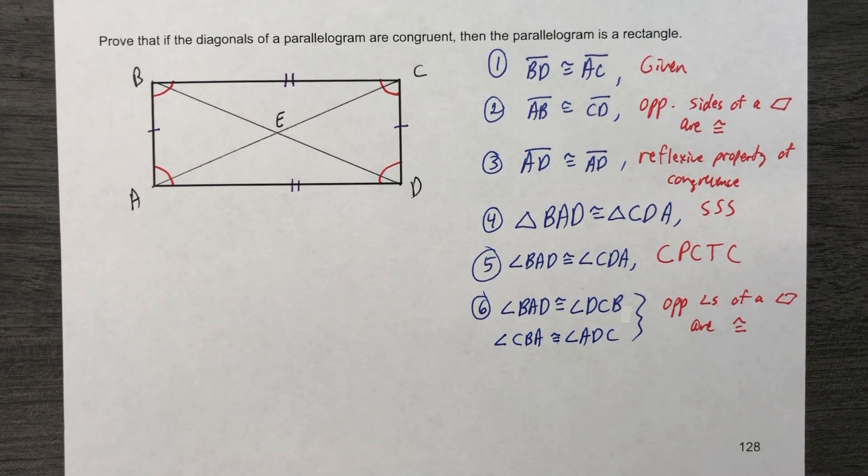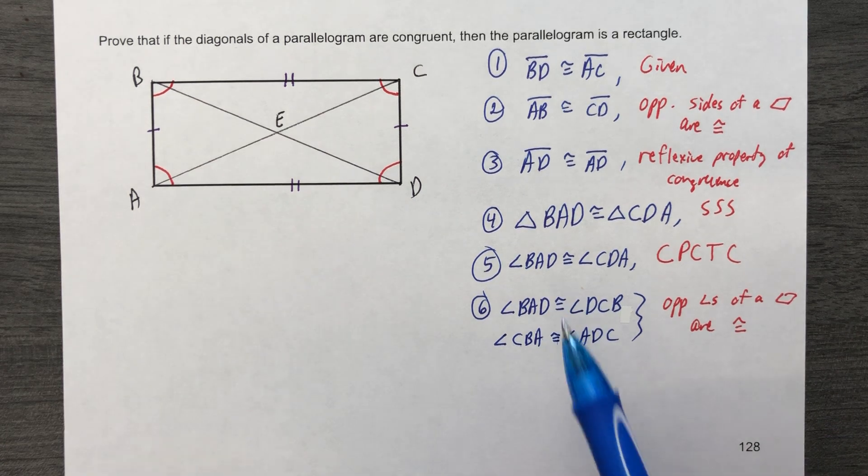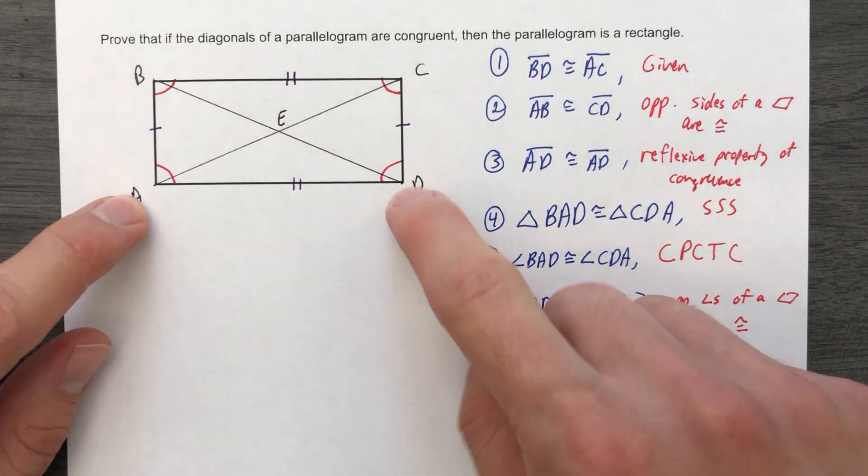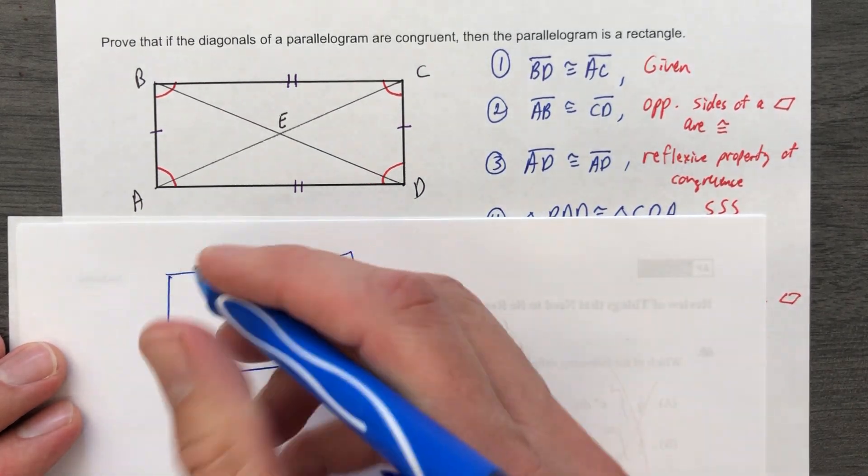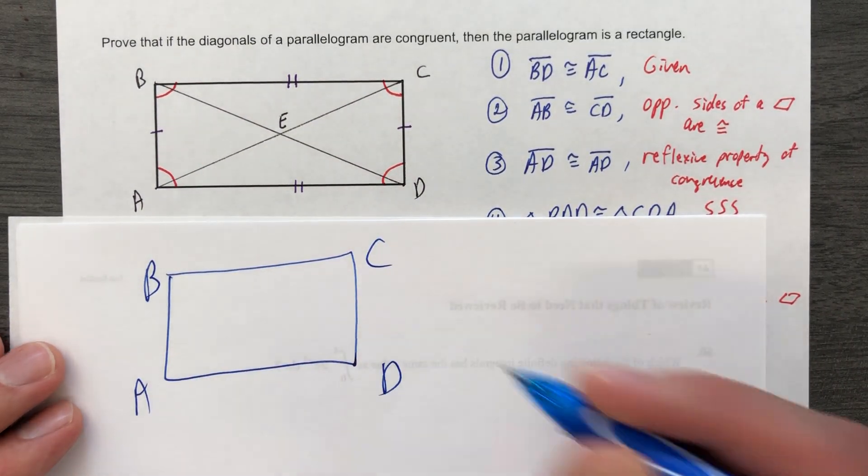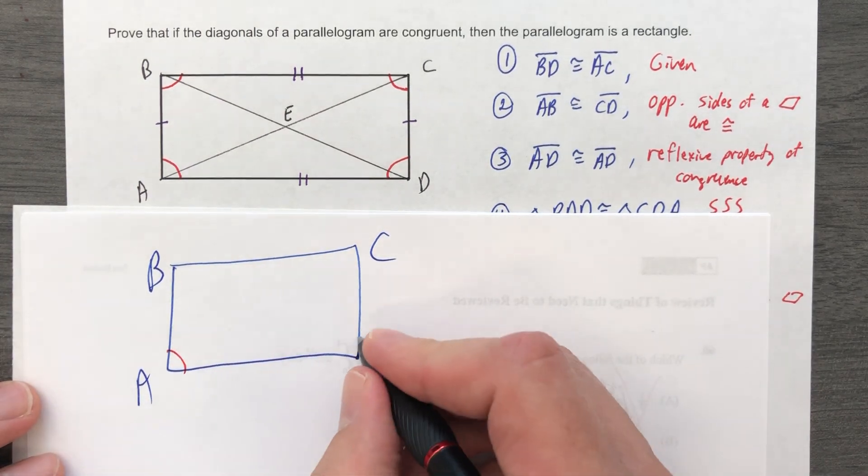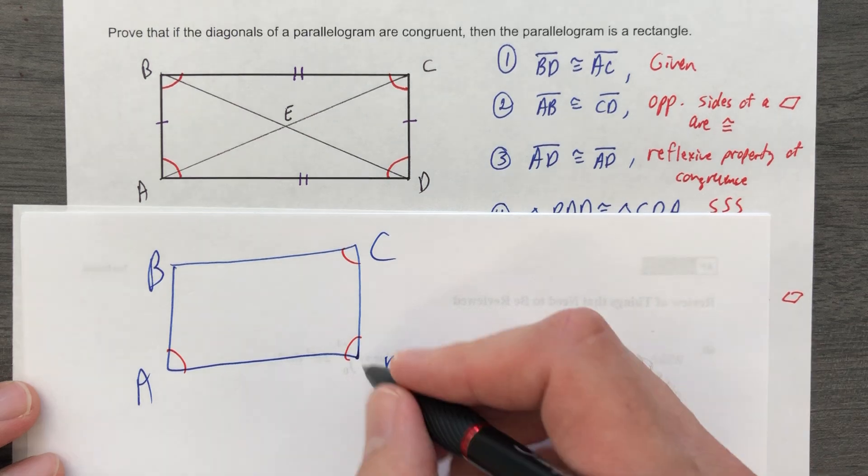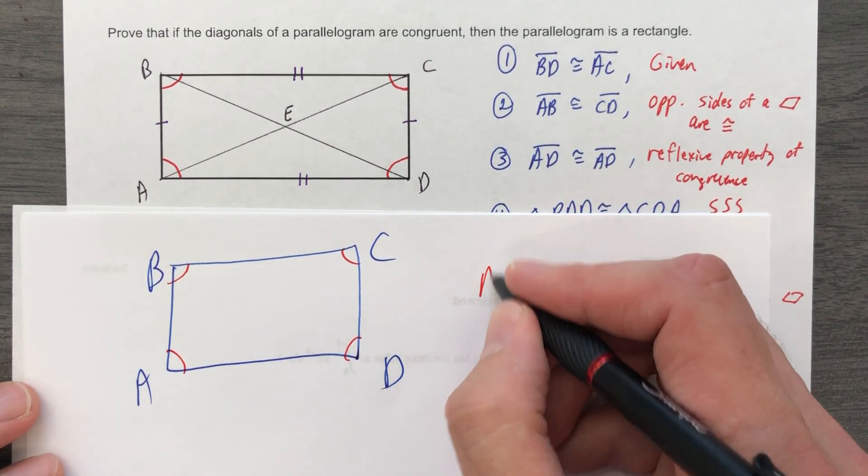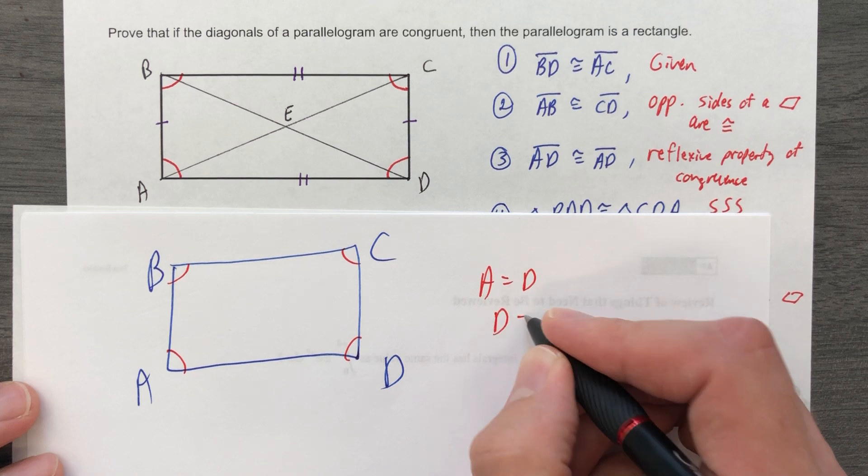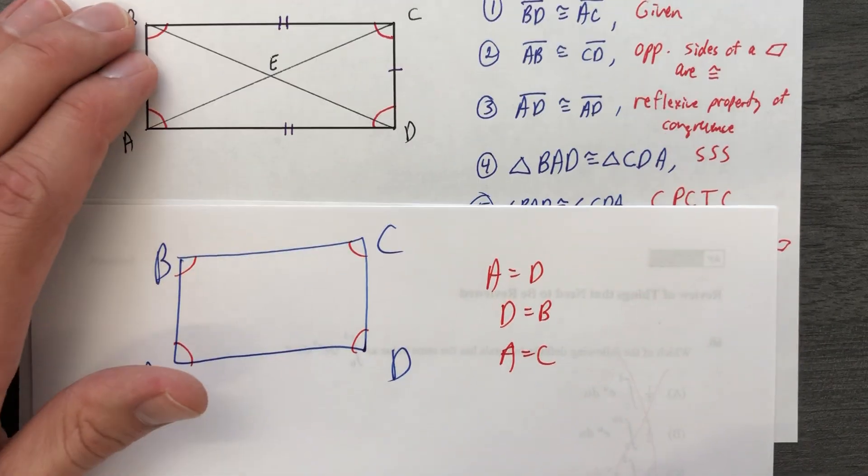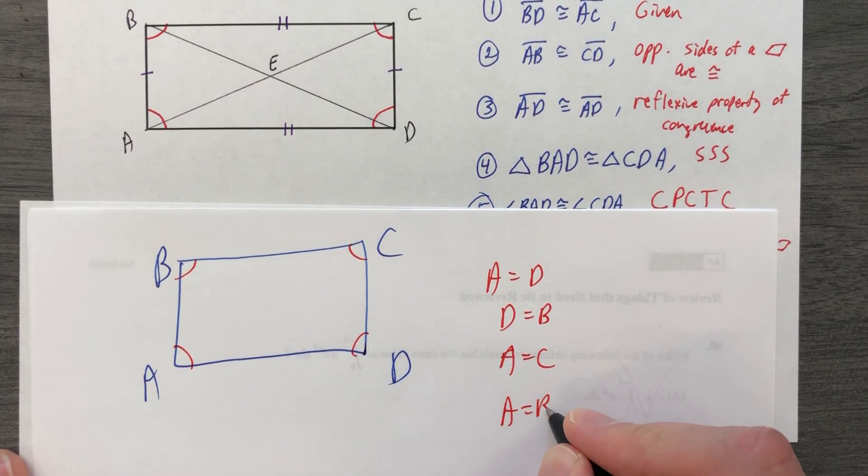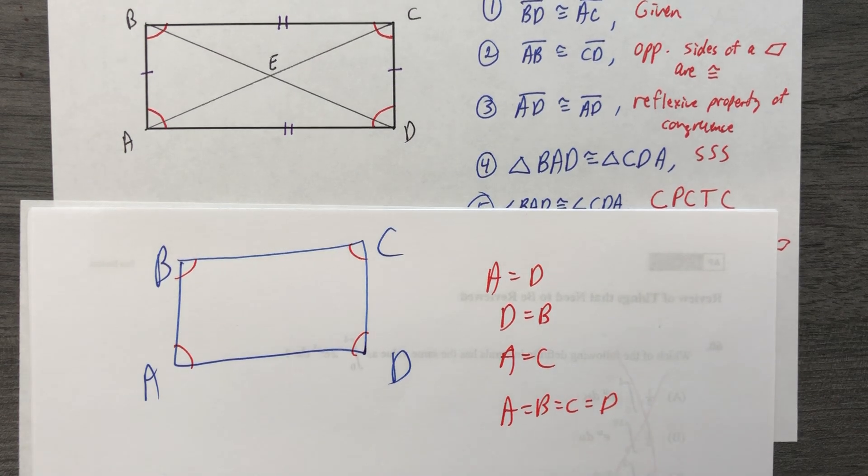So now we have this big thing where we're saying that BAD and CDA are the same. If we took out the diagonals, we could just use one letter. We have already made the determination that these are the same. And then we said A is equal to C and D is equal to B. So because A equals D and D equals B and A equals C, we can use the transitive property and we're going to end up with A equals B equals C equals D. They're all the same.